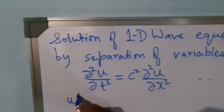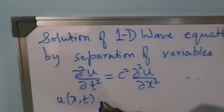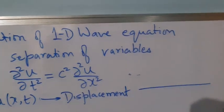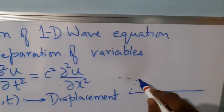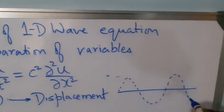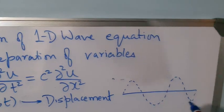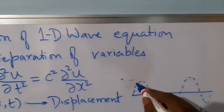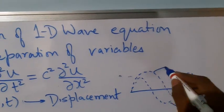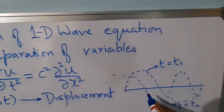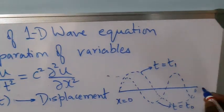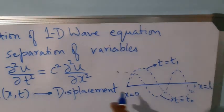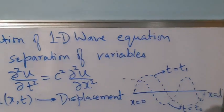We consider u of x,t which is displacement, because if we take a stretched string, different points on the string rise to different heights at different points of time. So at time t equal to t0 it could be something like this, and at t equal to t1 it could be different. If we take x equal to 0 and x equal to l, different points on the string are raised to different heights. Therefore, we have displacement u as a function of x and t.